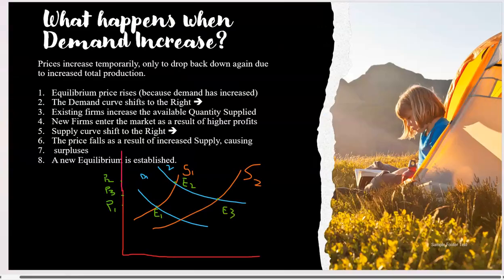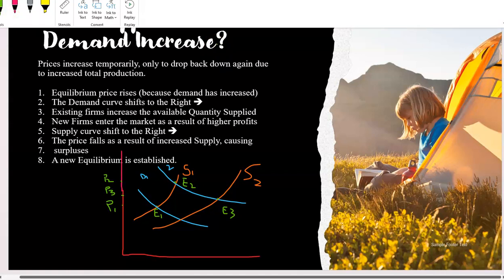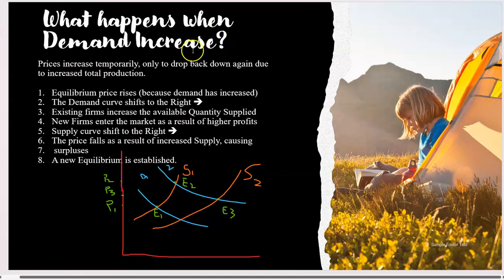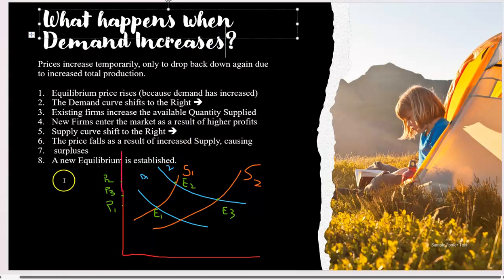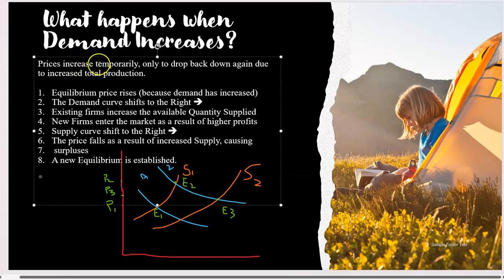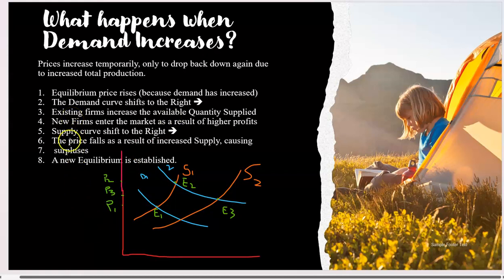Now, what happens when demand increases? When demand increases, here are the steps that happen. Price increases temporarily. Prices increase temporarily only to drop back down again due to increased total production. So what happens? Equilibrium price rises. We go from here to here. The existing firms increase the available quantity supplied, because the law of supply tells us that quantity supplied follows the price. New firms enter the market as a result of higher prices. So what's going to happen is the number of sellers is going to rise. That's actually a shift in the supply curve. It's no longer just the quantity is rising, but there are more sellers. Therefore, it is a non-price determinant. Supply itself will increase.